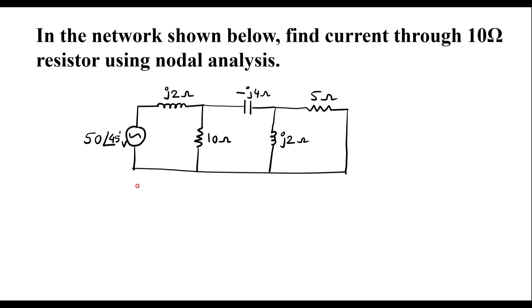In this video, I will consider one numerical on node analysis. In the network shown below, find current through 10 ohm resistor using nodal analysis. This is the given circuit — here we have a 10 ohm resistor, and we need to find current through this 10 ohm resistor using nodal analysis.